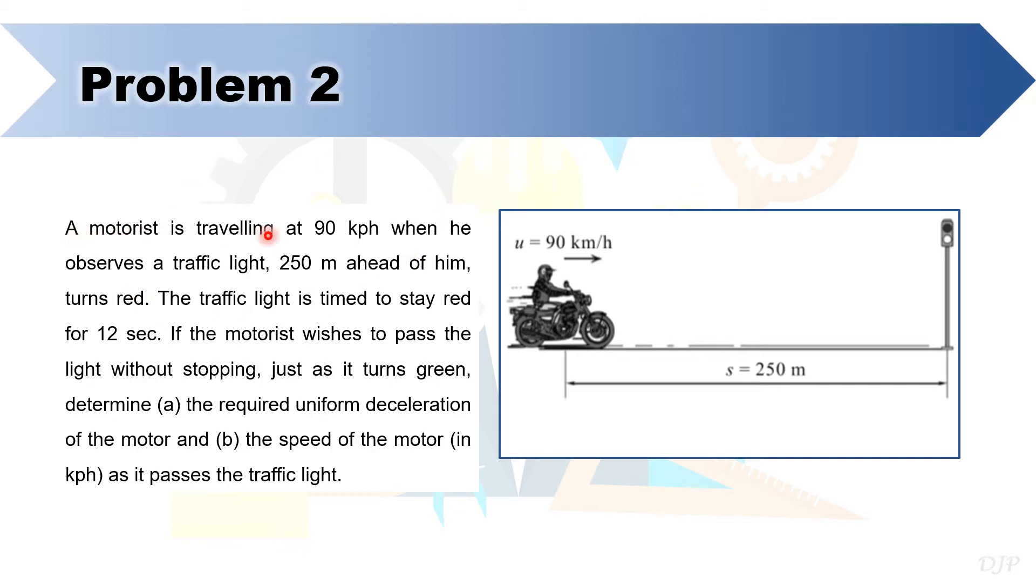We have here a motorist traveling at 90 kph when he observes a traffic light 250 meters ahead of him turns red. The traffic light is timed to stay red for 12 seconds. If the motorist wishes to pass the light without stopping, just as it turns green...